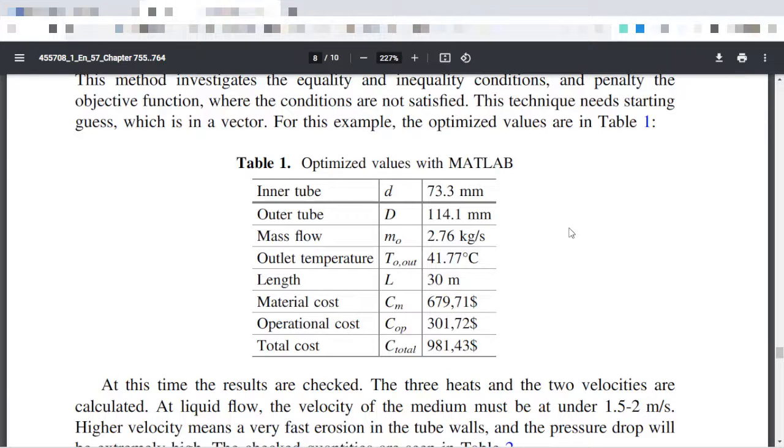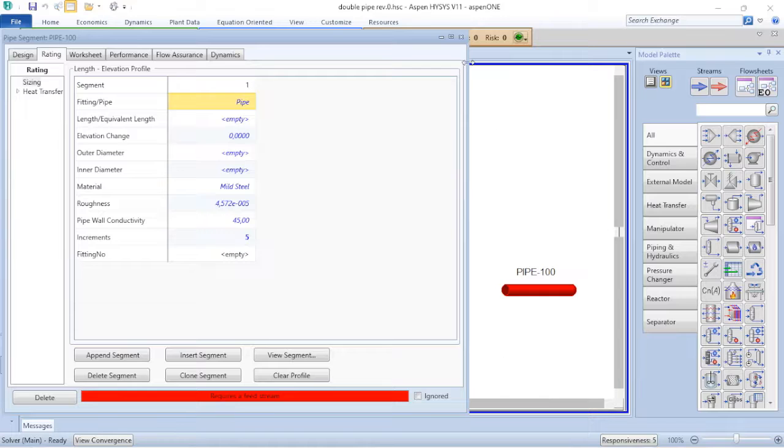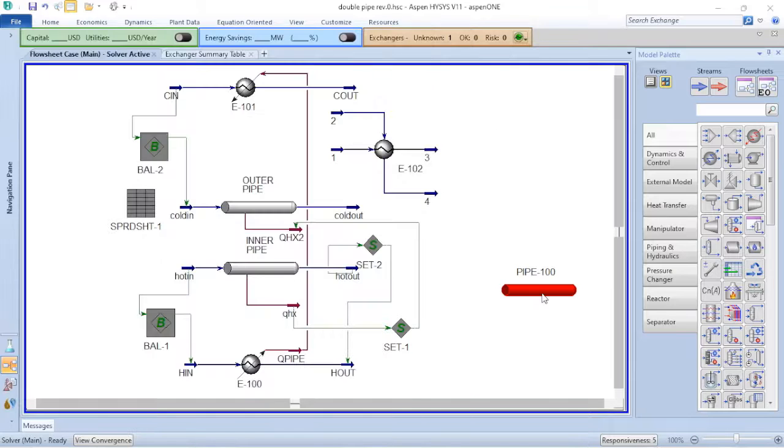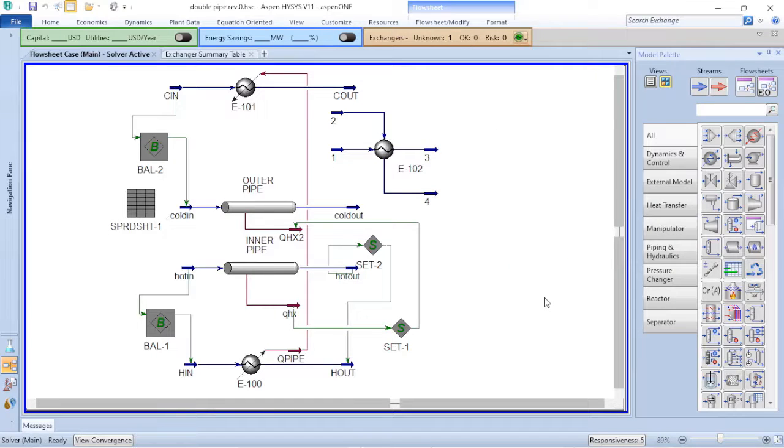Based on the previous equation that I shared with you, it's possible to do the calculation of the velocity in the annulus side of the heat exchanger. So to do that, let's return to Aspen HYSYS. I don't have a specific object to do a double pipe heat exchanger. I can simulate that on Aspen HYSYS and I know that I have two pipe segments.